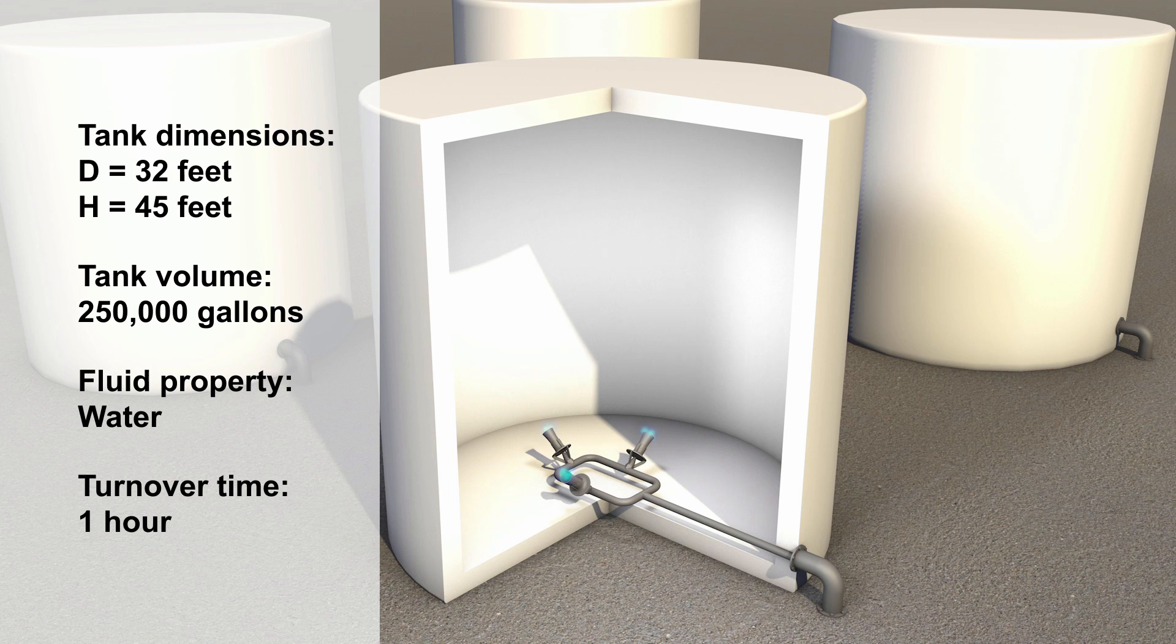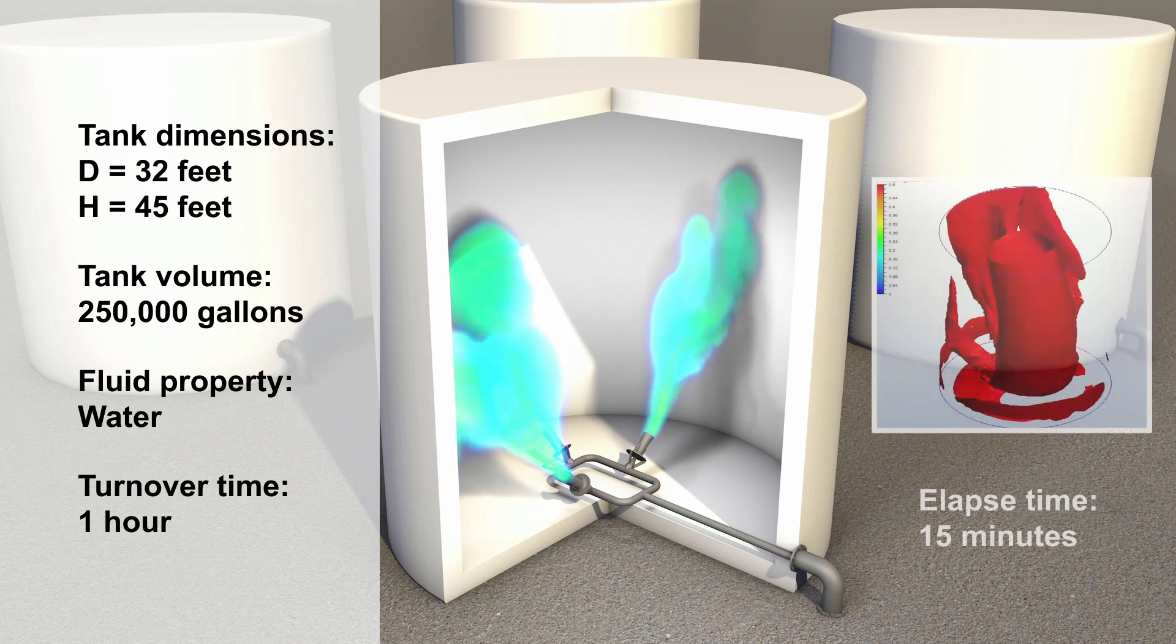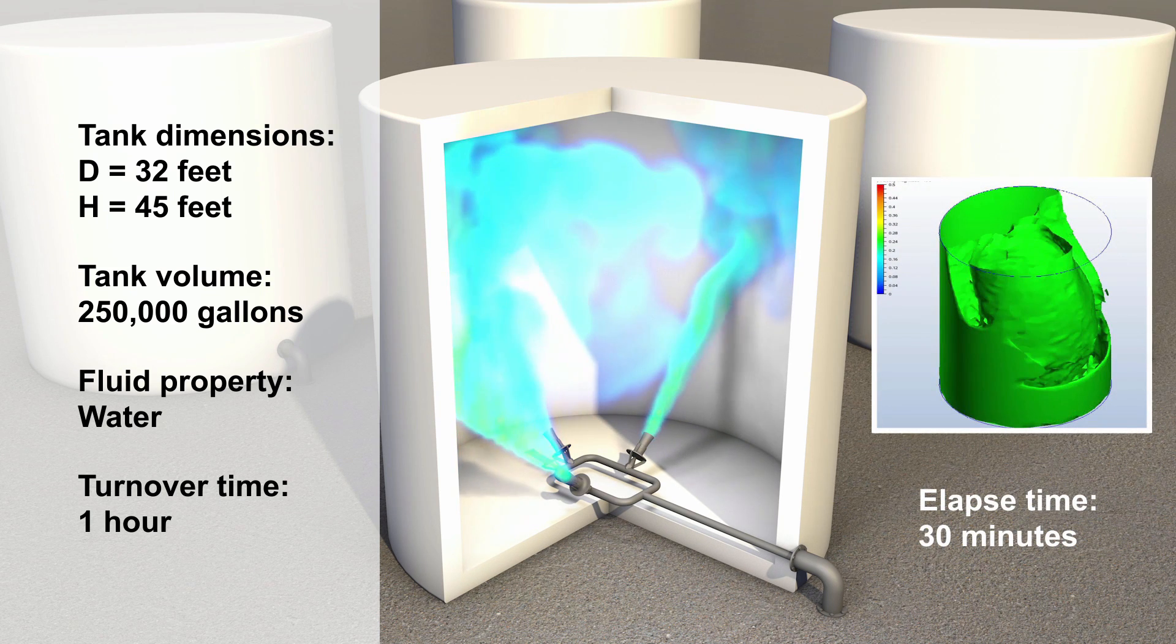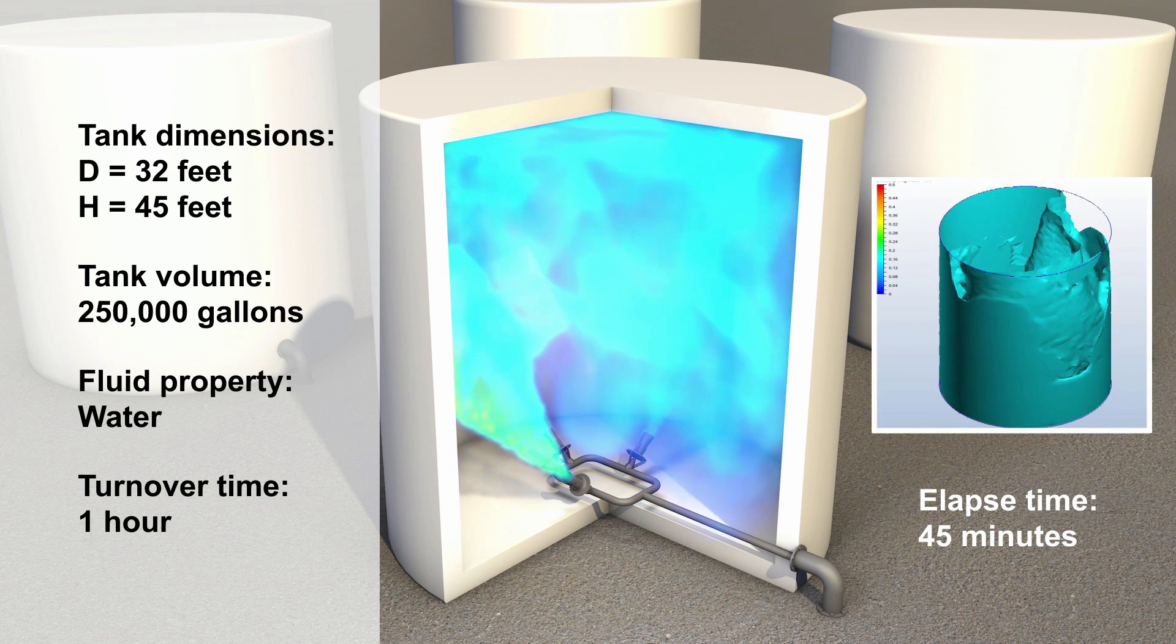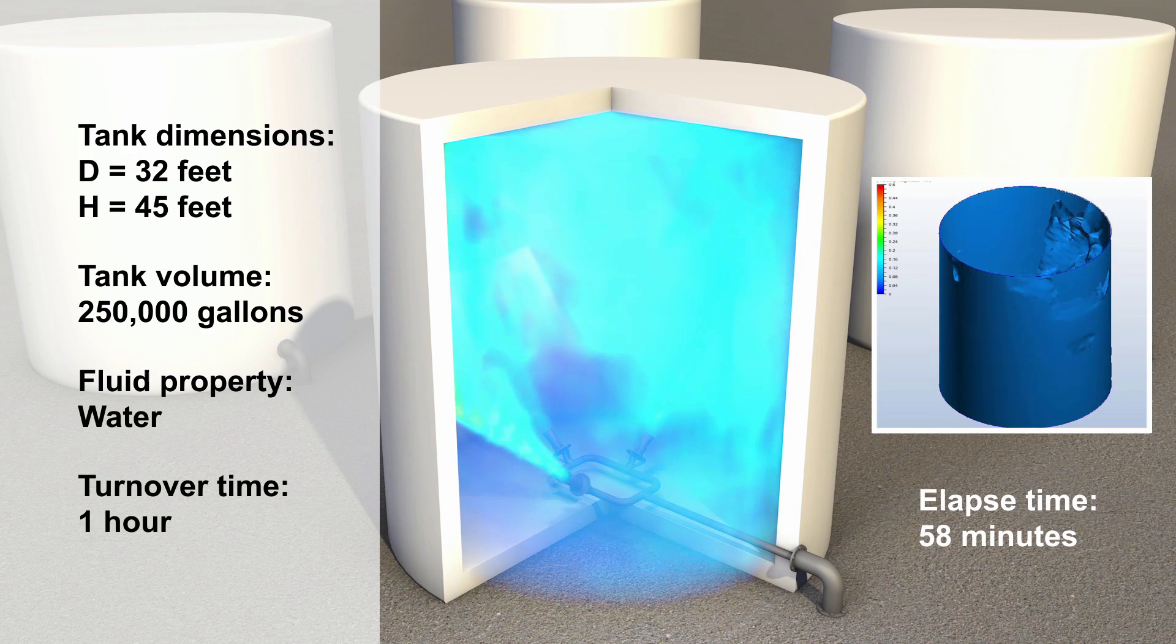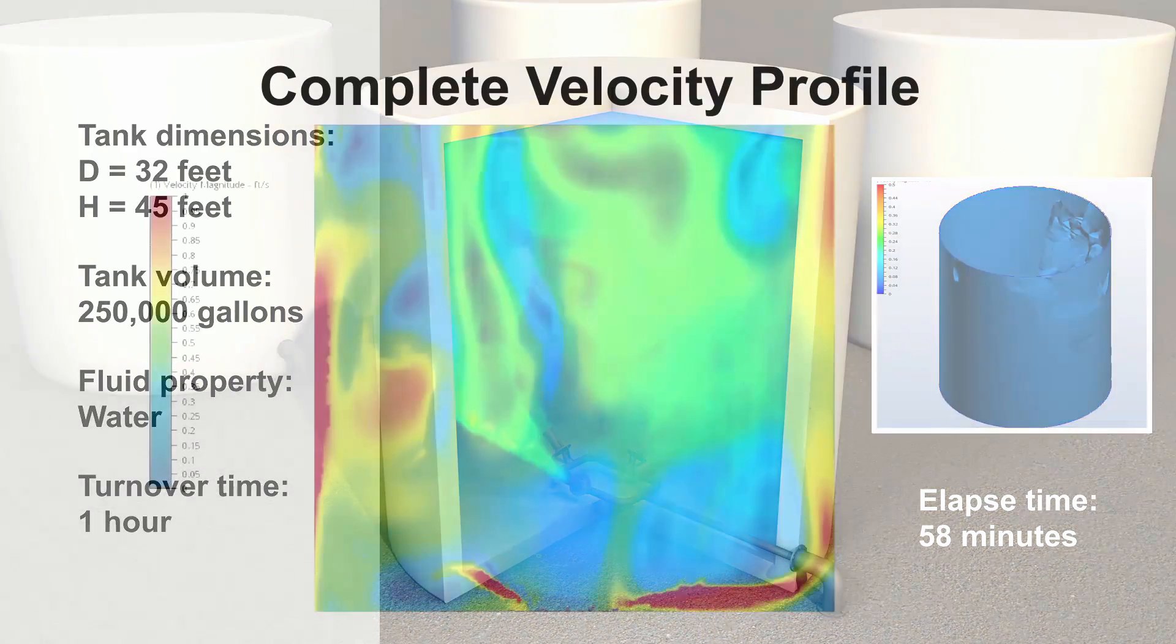The finished CFD analysis shows the average velocity flow growing in the tank. These are the results after 15 minutes, 30 minutes, 45 minutes, and finally at full blend, 58 minutes. We will then show the complete velocity profile at full blend.